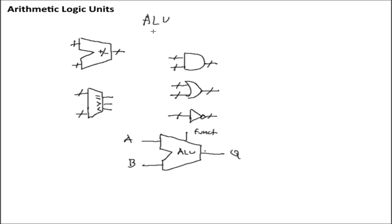The last thing that an ALU has that makes it distinct from other logic circuits is a secondary output referred to as flags. Flags are basically just auxiliary information about the output Q. For example, if you perform subtraction, the output will be A minus B, but you may have auxiliary information such as: is A equal to B? Did the result equal zero? The flags are going to behave very similarly to a digital comparator. You could also have greater than and less than flags on the output.